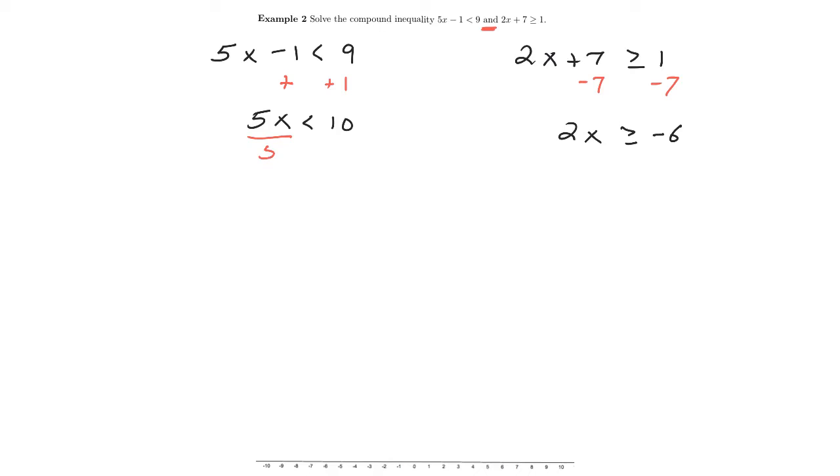On the left, I'm going to divide both sides by 5. On this right here, I'm going to divide both sides by 2. Notice in both of these, I divided both sides by a positive number. This means that the direction of the inequality does not change. So we have x is less than 2, and we have x is greater than or equal to negative 3.